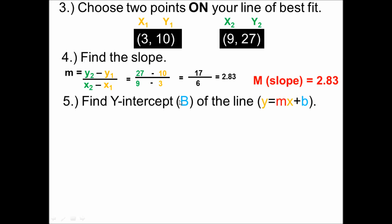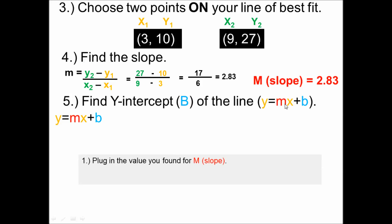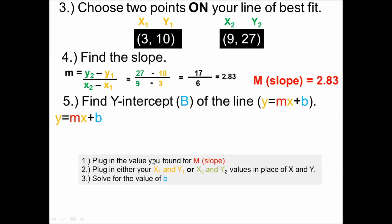Then we need to find our y-intercept. We need to find our y equals mx plus b. There are three steps: we want to plug in the value we found for slope, which is 2.83, we want to plug in either our x1 and y1 values or x2 and y2 — it doesn't matter — and then we solve for the value of b.